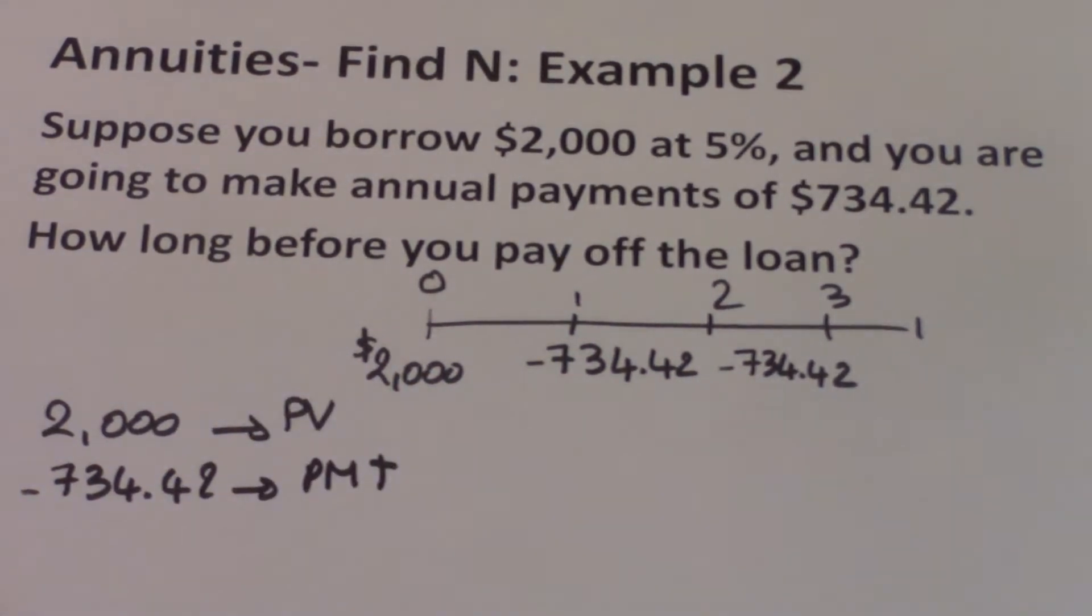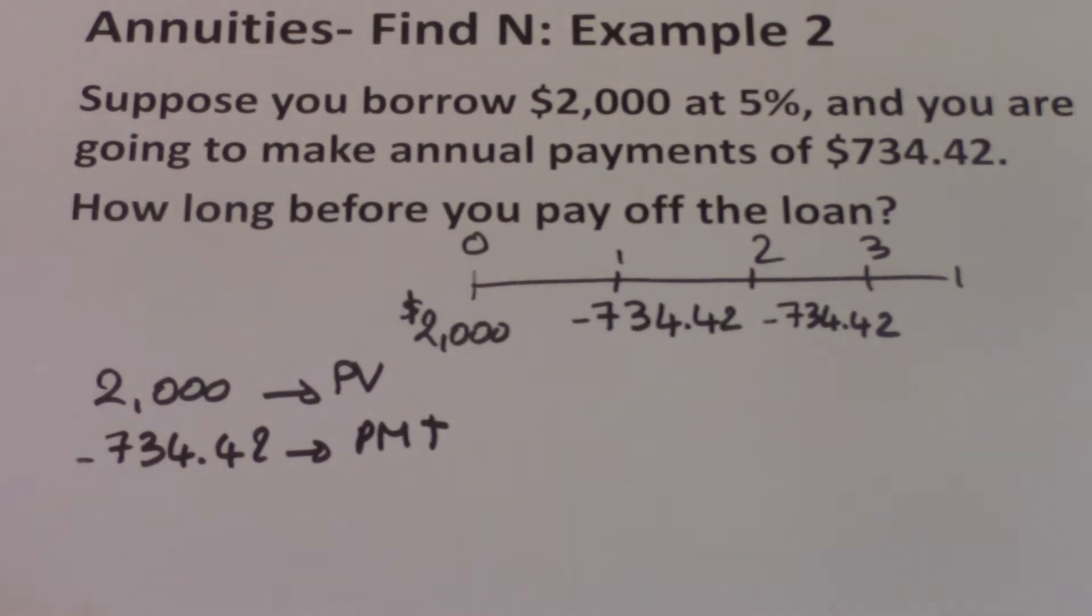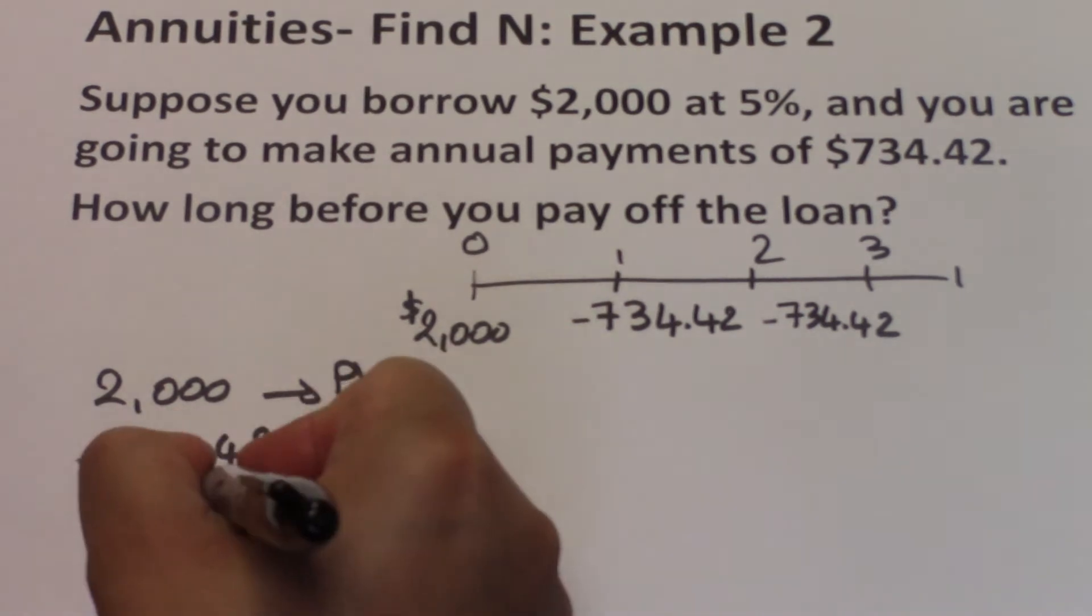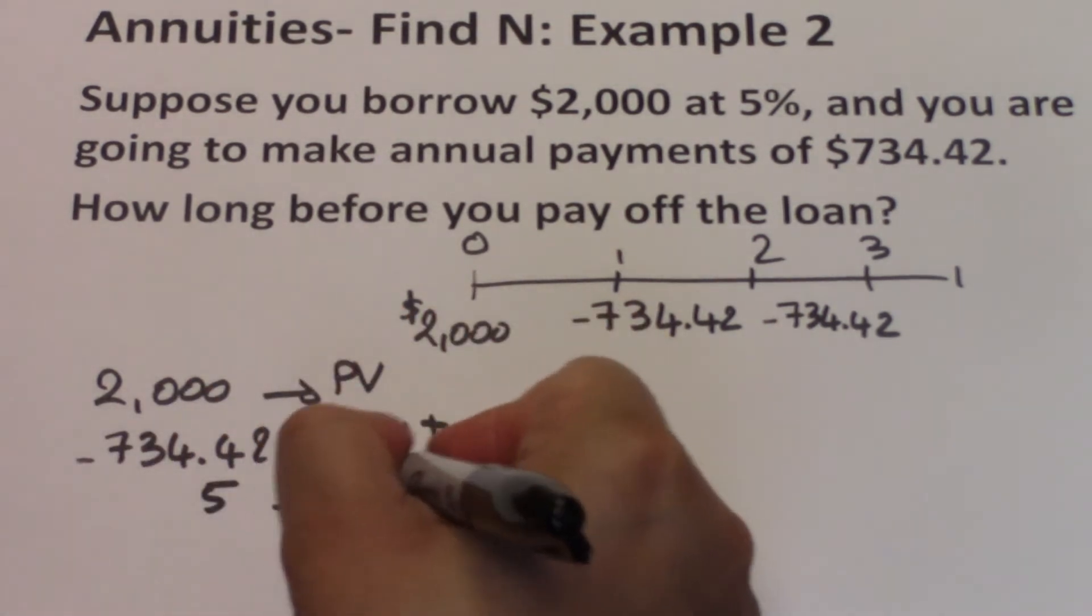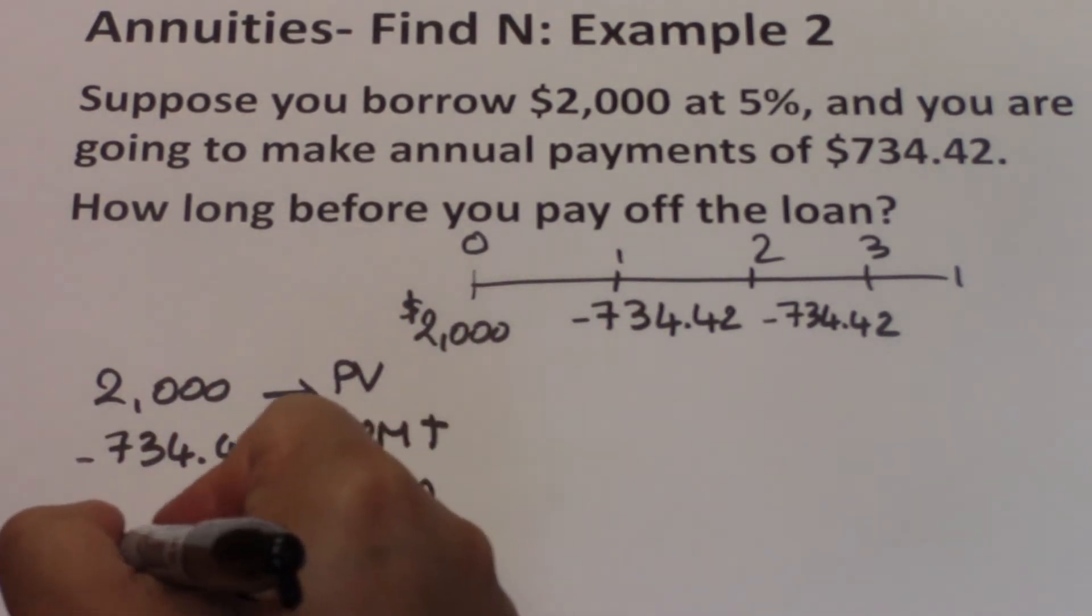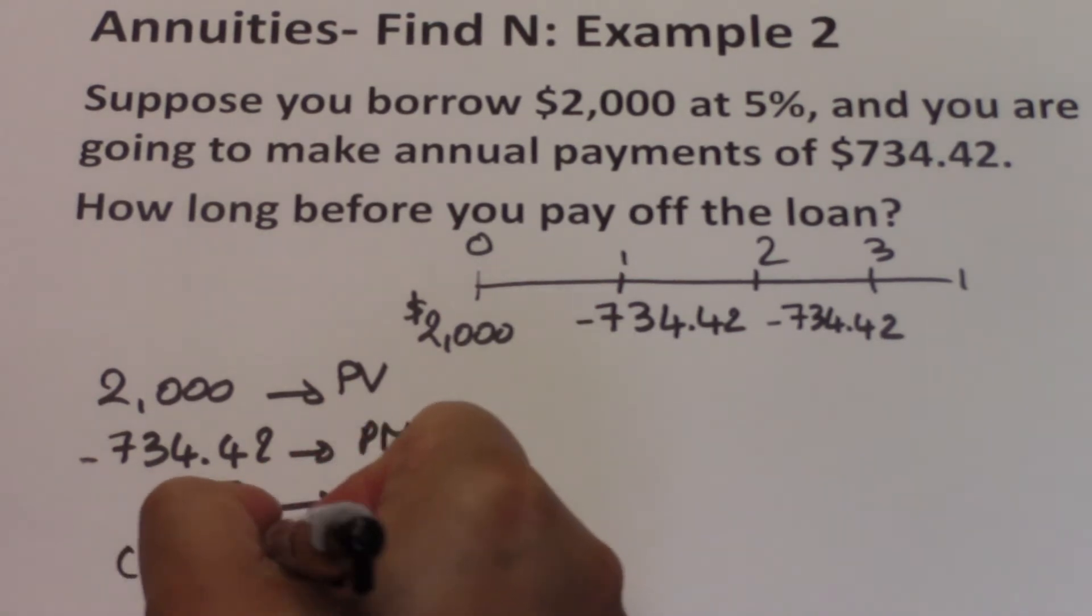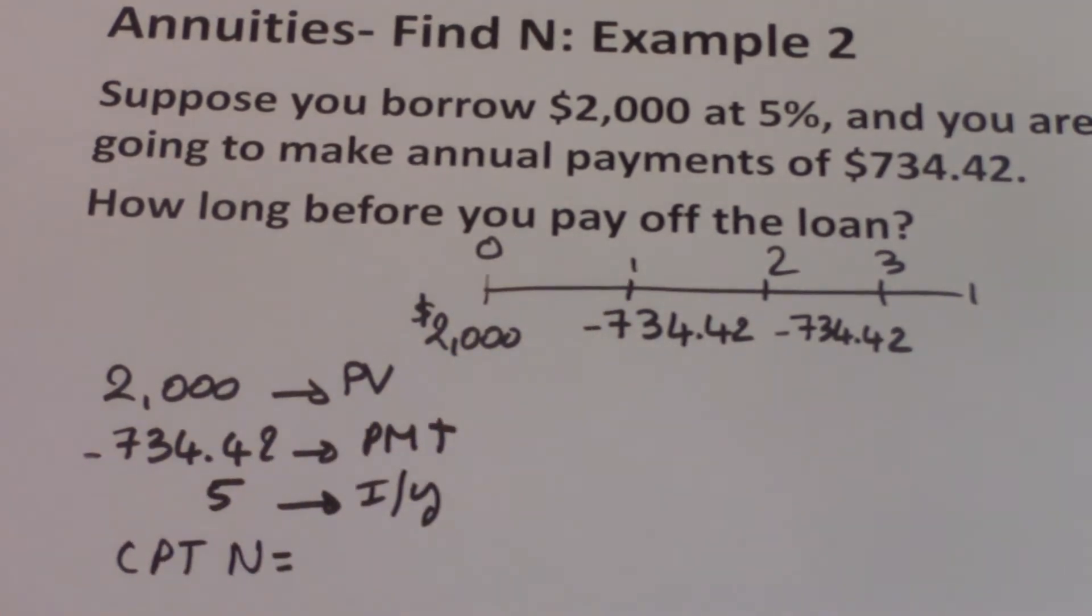You're paying 5% per year, the payment happens annually, so everything else should be annually. So 5 is your I over Y and then what we are doing is computing for N. Since the payment is yearly and the I over Y is yearly, then N is going to be a yearly number.